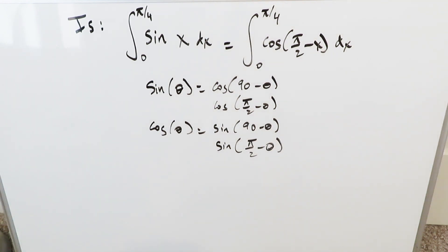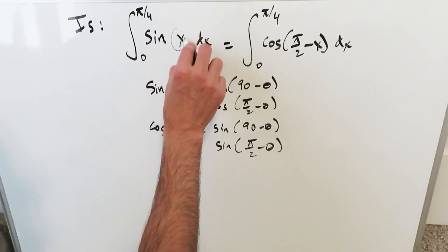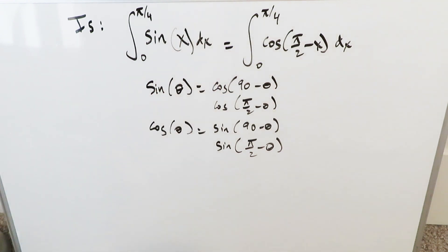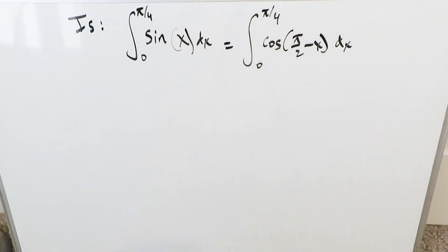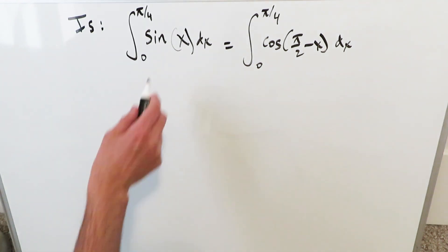The benefit of this exercise is that it shows you can do substitutions where normally you would not, and those substitutions can help make a complex function easier by means of a co-function identity. Look right here at the left-hand side.